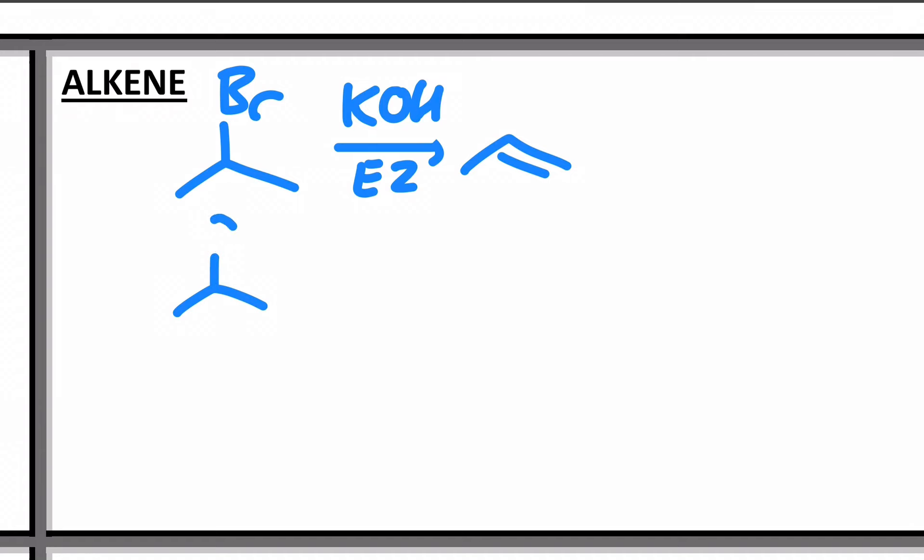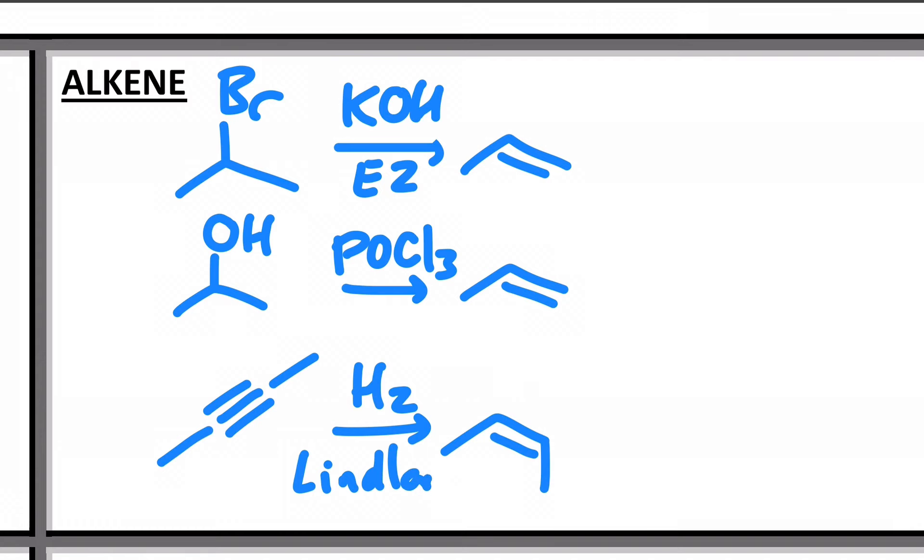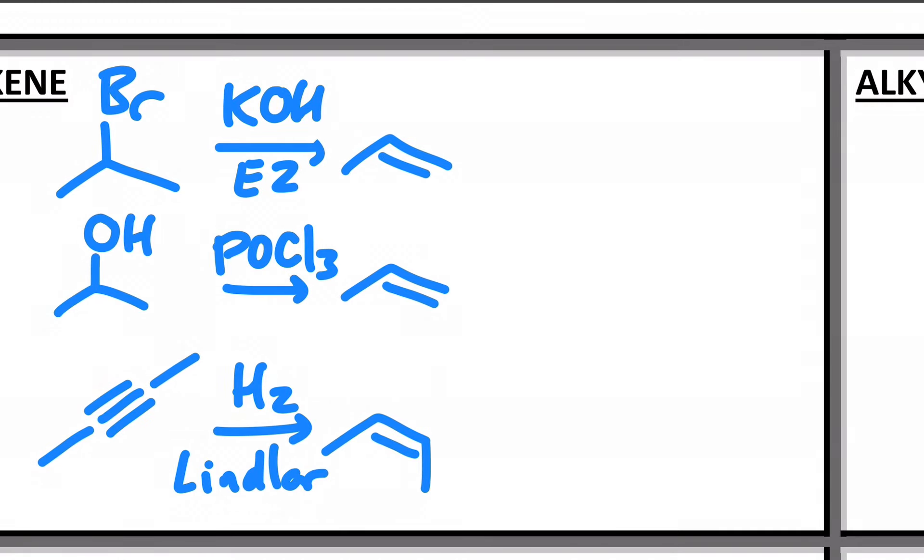The other functional group we already learned last semester and we've used a lot lately is the alcohol. You can do a dehydration on an alcohol with something like POCl3. And then also from Orgo 1, we learned how to take alkynes and turn them into alkenes. For example, you could do a Lindlar reduction to make the cis alkene. Alternatively, we could take the same alkyne and turn it into a trans alkene.